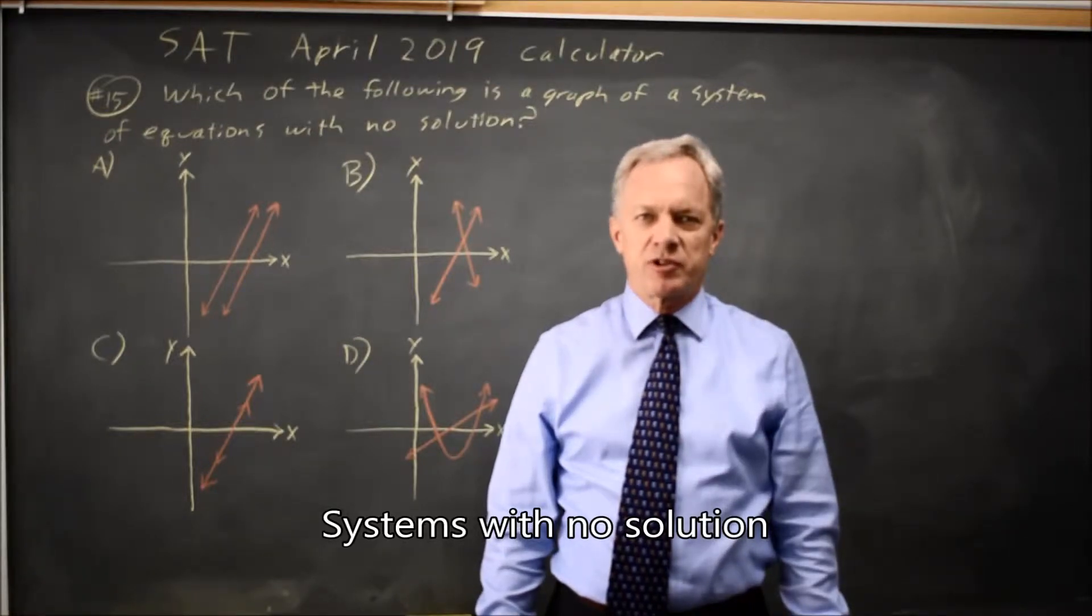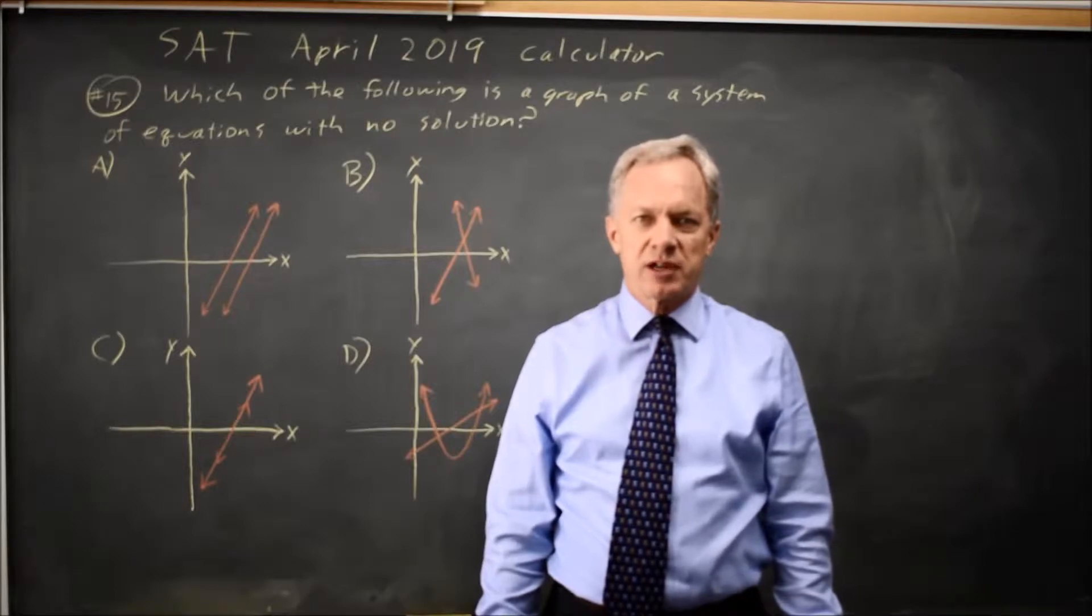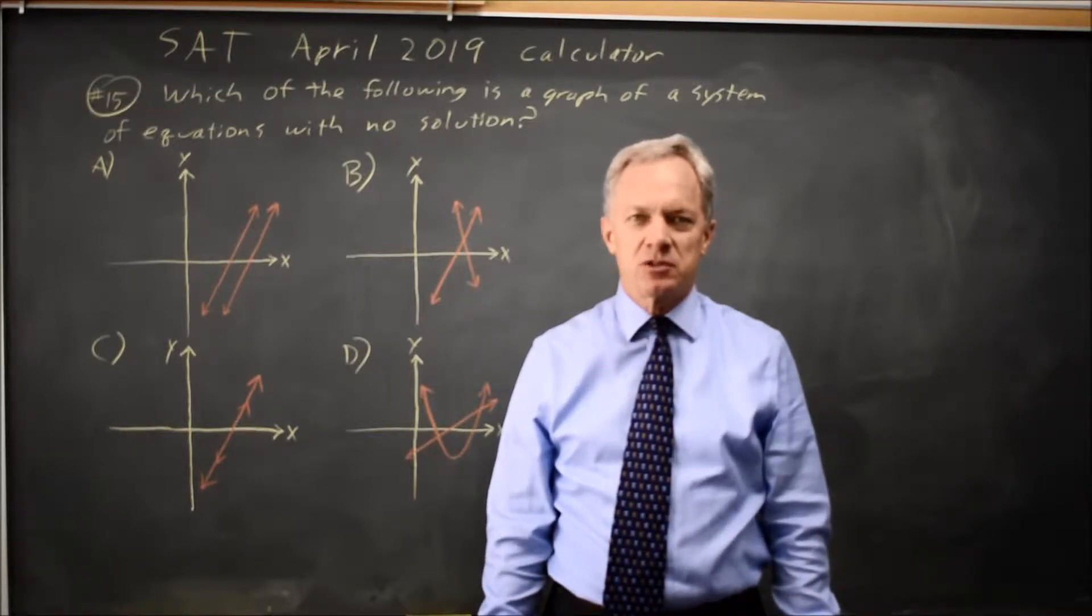This is calculator question number 15 from the April 2019 SAT. The College Board gives us four graphs and asks which one is the graph of a system with no solutions.